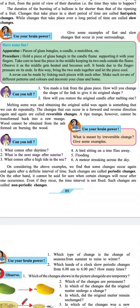Melting some wax and obtaining the original solid wax again is something that we can do repeatedly. The changes that can occur in a forward and reverse direction again and again are called reversible changes. A ripe mango, however, cannot be transformed back into a raw mango.